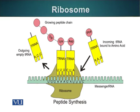Ribosomes basically catalyze the reaction in which two amino acids are linked together via a peptide bond. This bond formation is catalyzed by an RNA molecule present in the large subunit of the ribosome — it is not a protein which is catalyzing this reaction. So, the enzymatic activity of the ribosome is due to an RNA molecule.